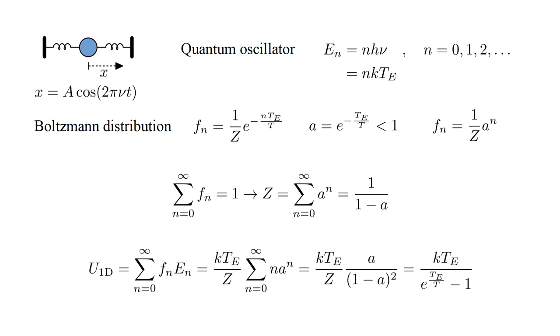Now we can calculate the average energy of the one-dimensional quantum oscillator. This is the sum from n equals zero to infinity, that is the sum over all possible energy states, of f_n, the probability of that state, times E_n, the energy of that state. This is k T_E over Z times the sum of n a to the n. This sum evaluates to a over quantity one minus a squared. Substituting for a and simplifying, we get k T_E over e to the T_E over T minus one.